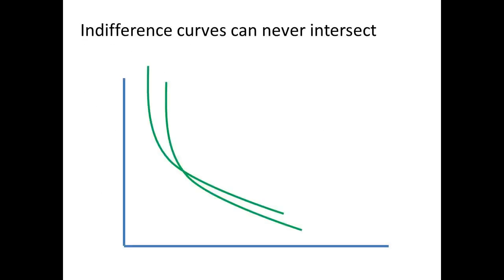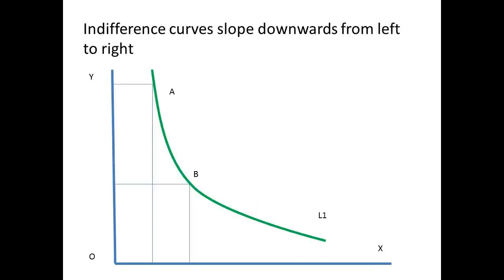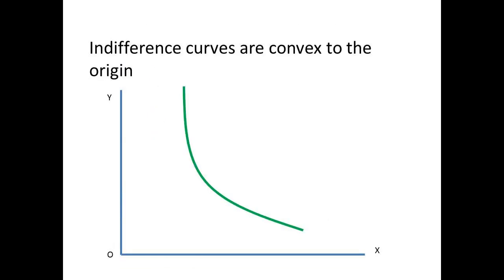There are certain characteristics of indifference curves. The first is that they can never intersect. Indifference curves slope downwards from left to right — as some of good y are given up, then more of good x are consumed, represented by a movement from point a to point b. Indifference curves are convex to the origin. As more of y is given up, then an increasing amount of x must be obtained. This idea is known as the diminishing marginal rate of substitution. The slope of the indifference curve at any point is the marginal rate of substitution.